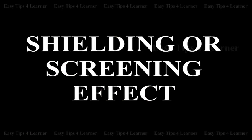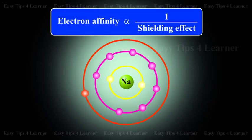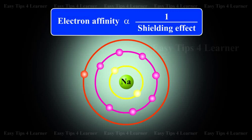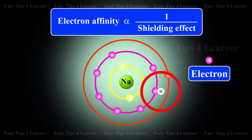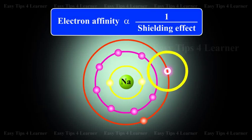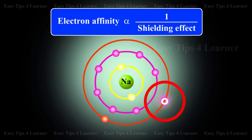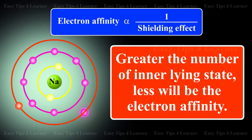Shielding or Screening Effect. Electron affinity is inversely proportional to the shielding effect. Electron energy states lying between the nucleus and the outermost shell hinder the nuclear attraction for an incoming electron. Therefore, greater the number of inner lying shells, less will be the electron affinity.